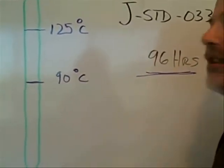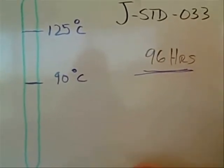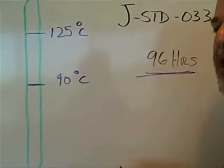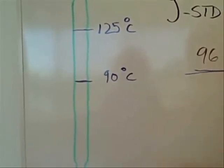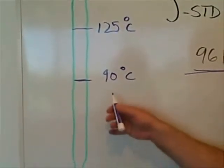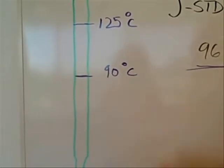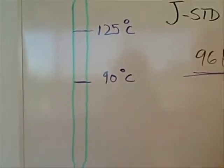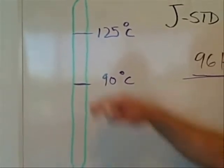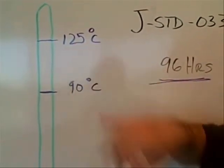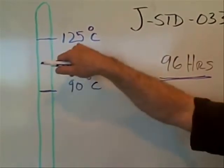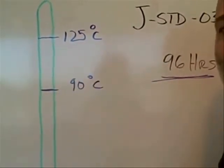96 hours is how long you can bake before you have potential solderability concerns. If you're doing your baking under 90 degrees C, there's no limit. The specification says bake it as long as you want under that temperature. But it's indicating in this range, a 96 hour limit. And it says if you need to go over 125, you should be talking to your component supplier. You don't want to be baking over 125 without consulting the component supplier.